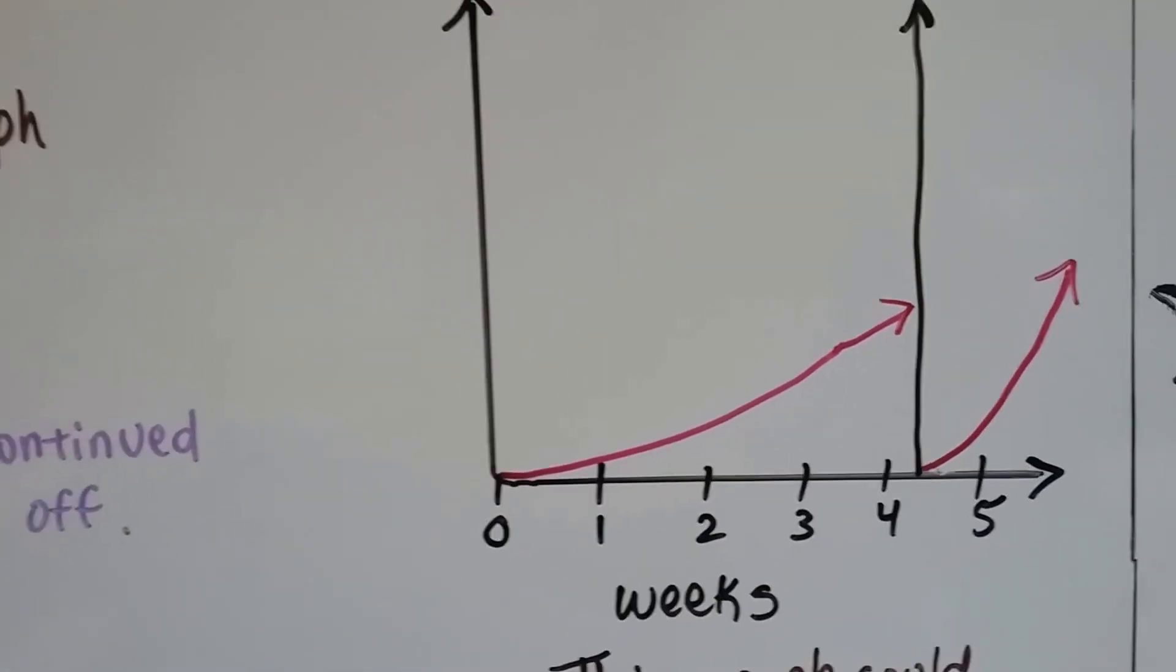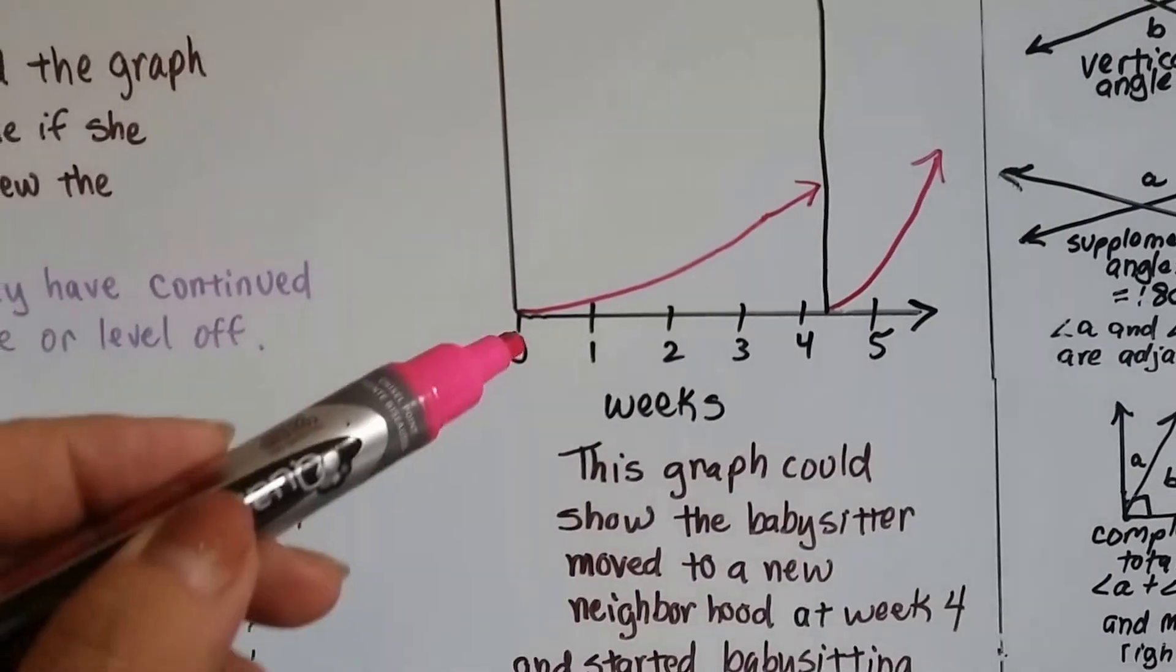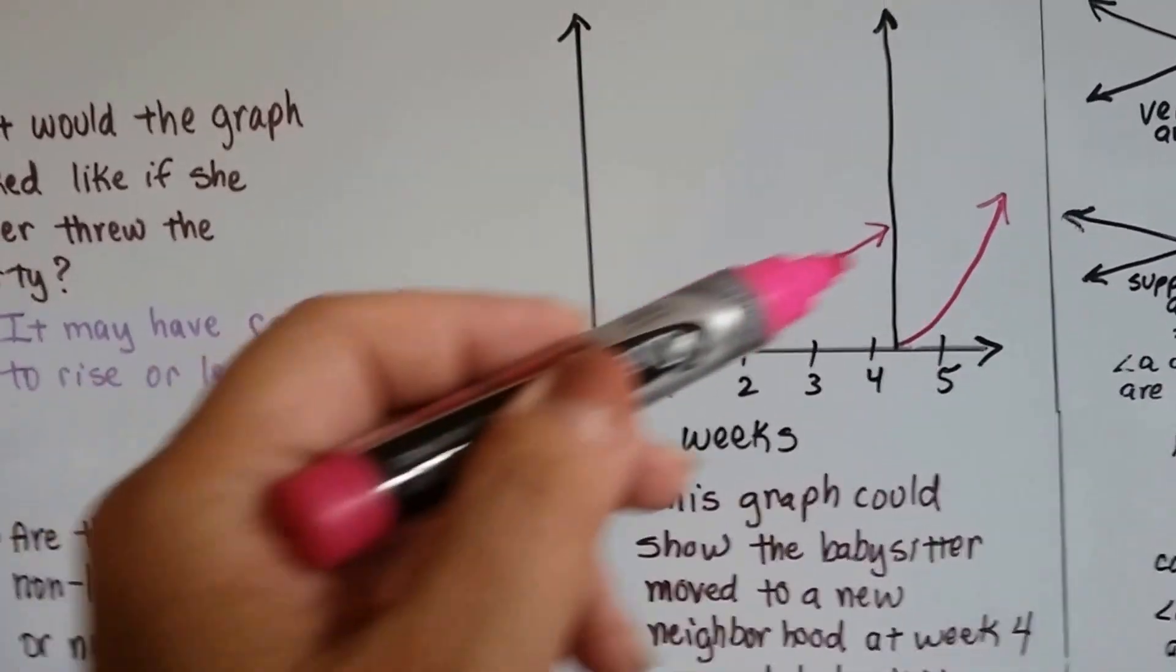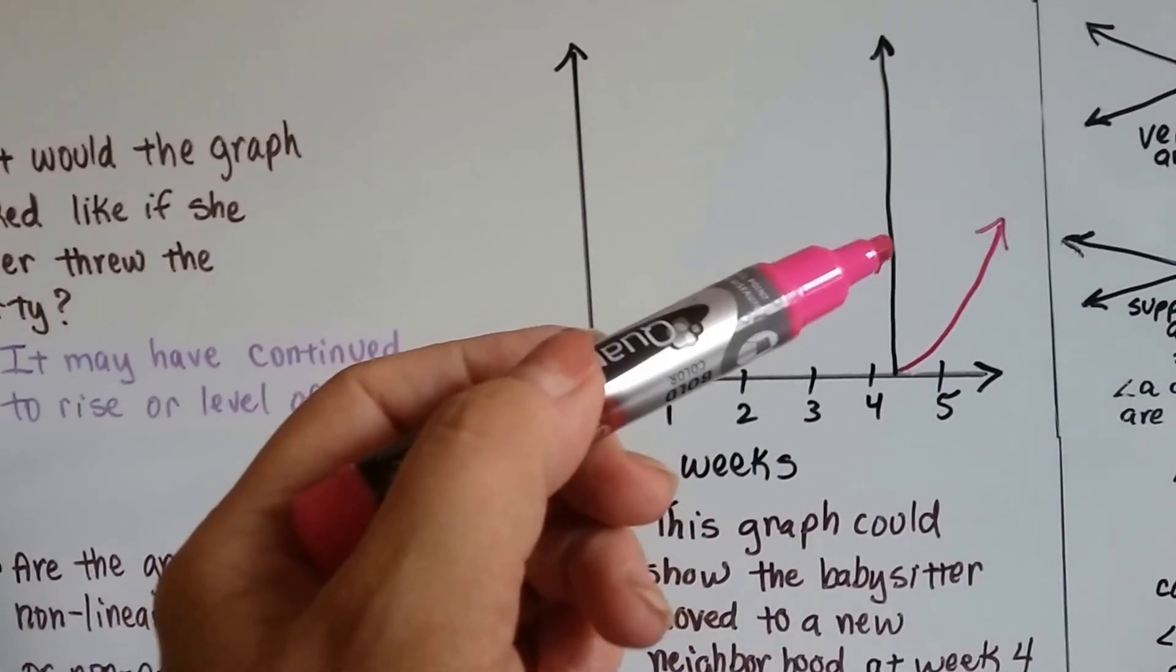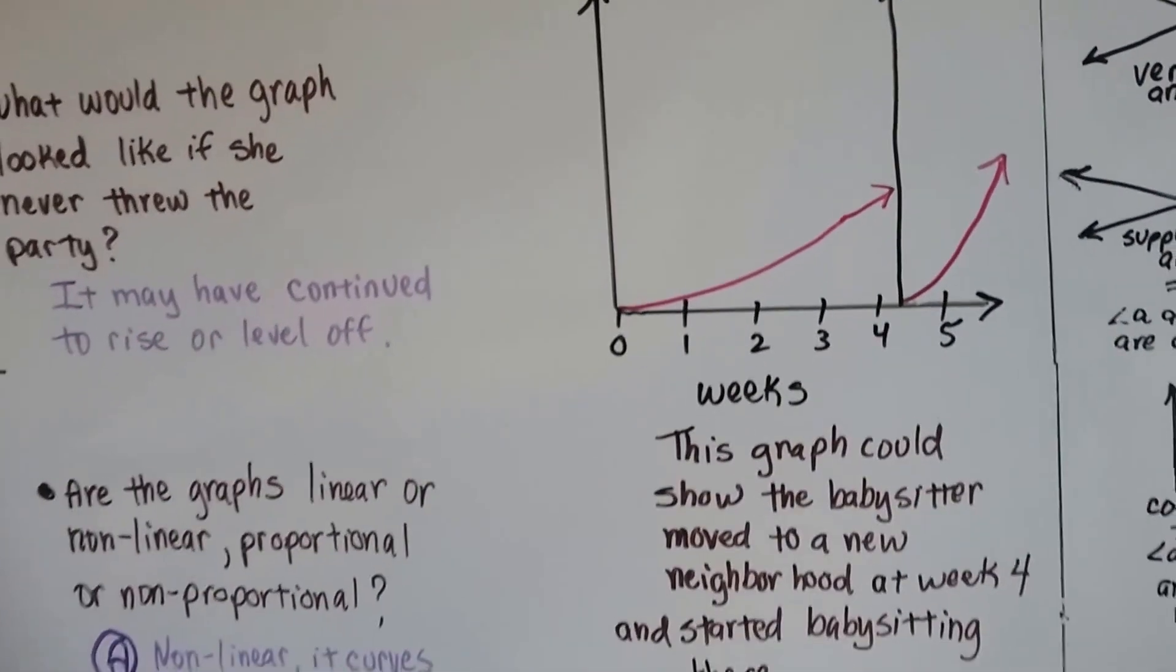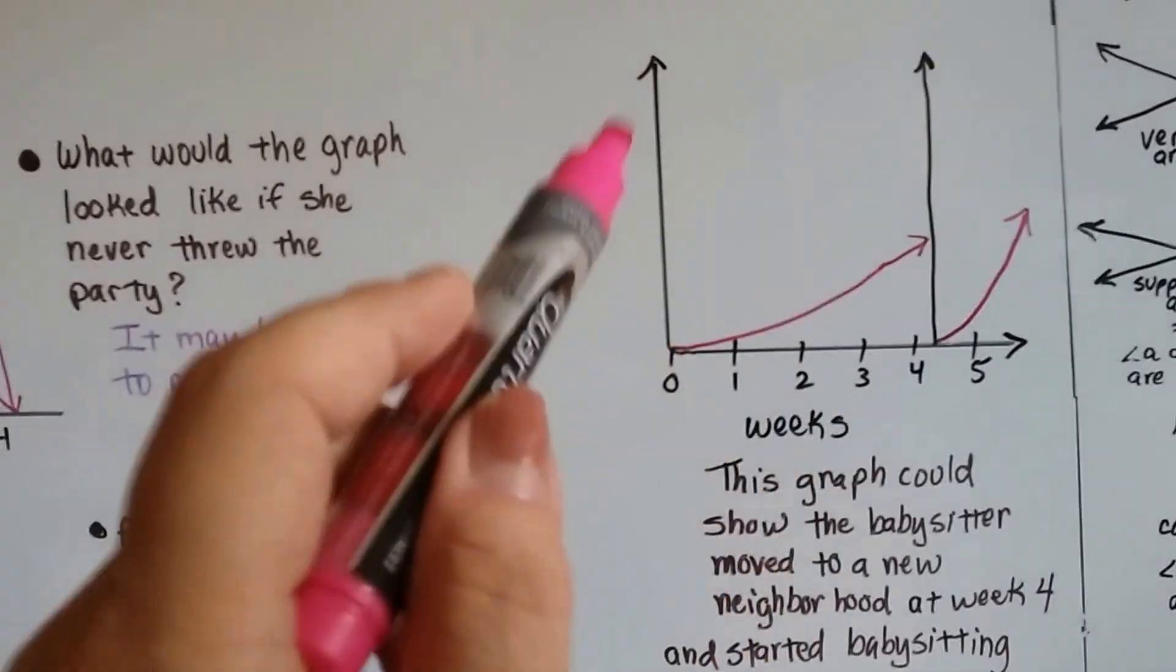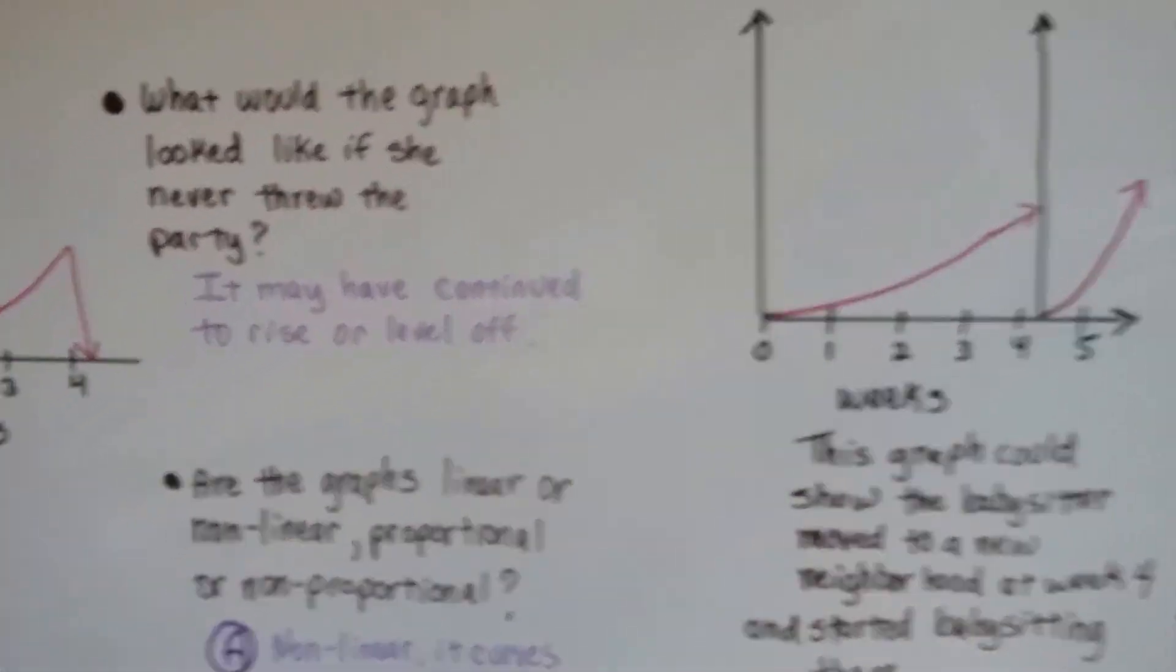A graph can do that. This graph could show the babysitter move to a new neighborhood at week four. She didn't throw the party. Her business was increasing, but then her family moved. And she started her business again in the new neighborhood and it started increasing. So that's what it could show. So there could be two y-axes. Isn't that something?